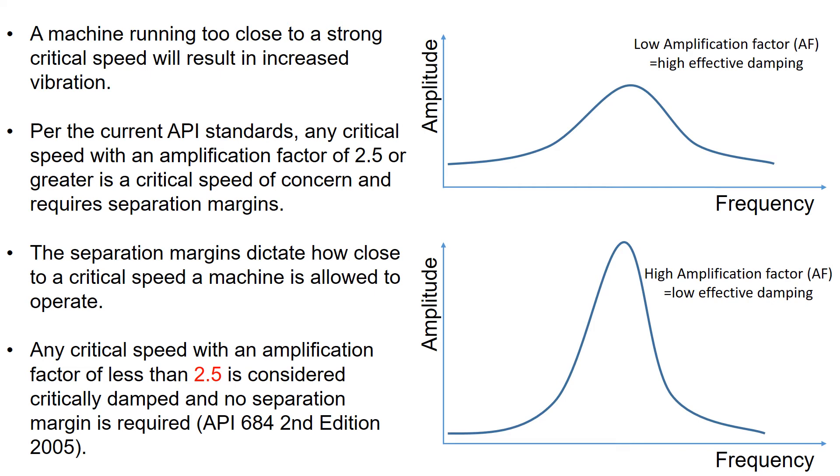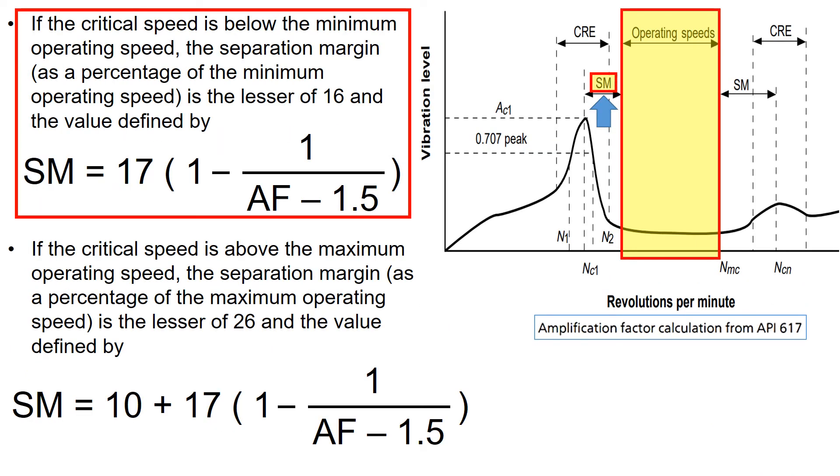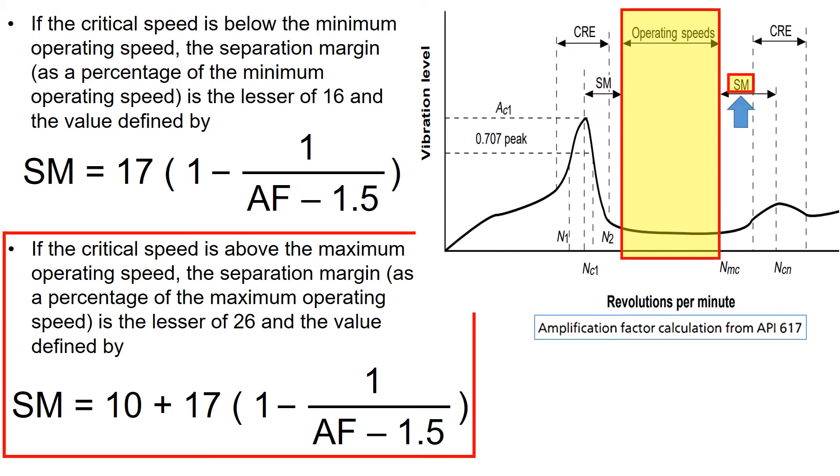If the critical speed is below the minimum operating speed, the separation margin is estimated using the equation shown on the top left. If the critical speed is above the maximum operating speed, the separation margin is estimated using the equation shown on the bottom left.